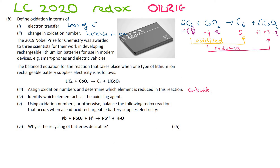Identify which element acts as the oxidizing agent. The oxidizing agent is the element that causes the other element to be oxidized. We know that carbon has been oxidized, nothing has happened to lithium, and cobalt has been reduced. So the oxidizing agent is cobalt — technically it's in cobalt oxide, but the question asks to state the element.